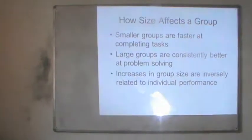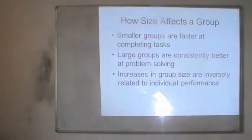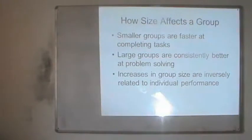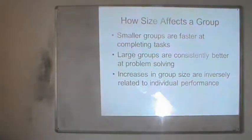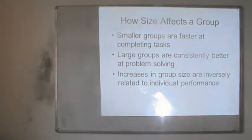The next factor is size — how size affects a group. Small groups are faster at completing tasks. Large groups are consistently better at problem solving because more people bring more ideas and views, making problem solving faster, and work can also be delegated. However, increasing group size is inversely related to individual performance — the bigger the group, the more inversely affected individual performance becomes. Group size matters for overall group effectiveness.